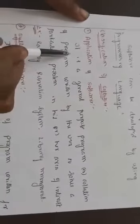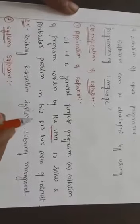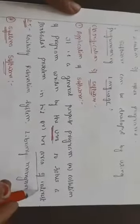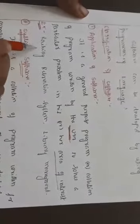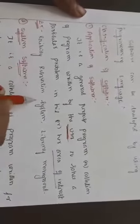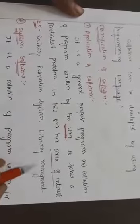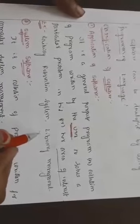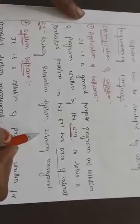What are the different types of software? The software can be classified into application software. Application software is a general purpose program or collection of programs written by user to solve a particular problem in his area of interest. Examples include railway reservation system, library management, airport system, or bus reservation.